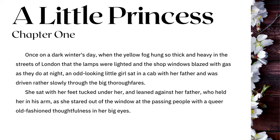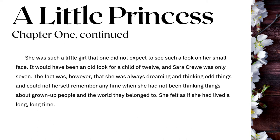A Little Princess, Chapter 1: 'Once on a dark winter's day, when the yellow fog hung so thick and heavy in the streets of London that the lamps were lighted and the shop windows blazed with gas as they do at night, an odd-looking little girl sat in a cab with her father, and was driven rather slowly through the big thoroughfares. She sat with her feet tucked under her and leaned against her father, who held her in his arms as she stared out of the window at the passing people with a queer, old-fashioned thoughtfulness in her big eyes. She felt as if she had lived a long, long time.'